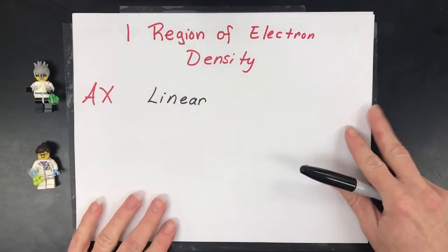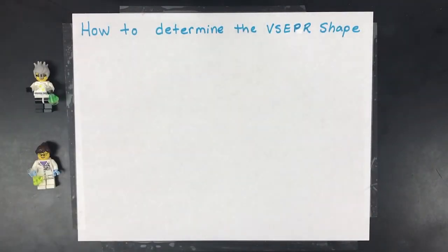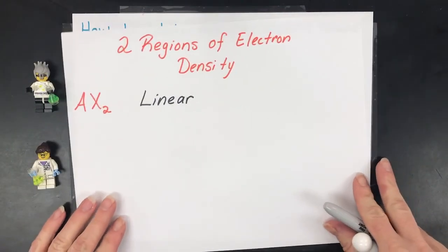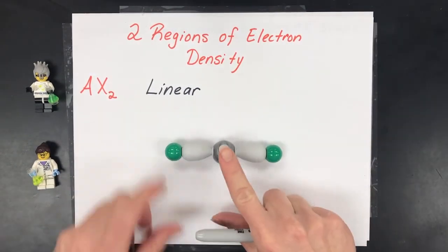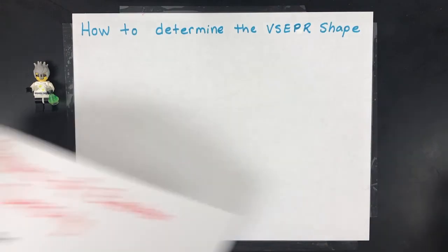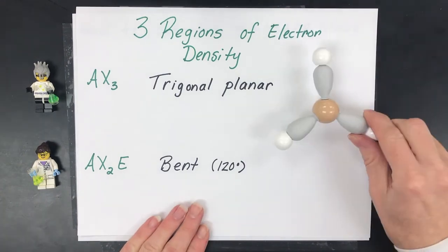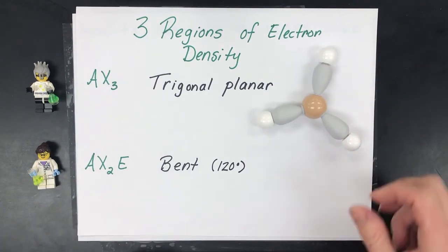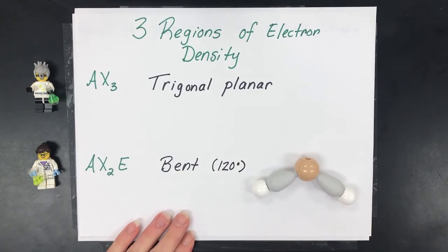With one region of electron density the shape is linear. With two regions of electron density around the central atom it's also linear, where the two regions are where the bonds are made. When you get to three regions, depending on whether they're all bonded or there's a lone pair, you can have a trigonal planar shape or a bent shape with 120 degrees.